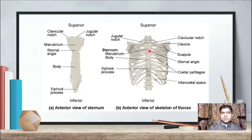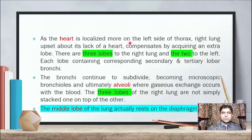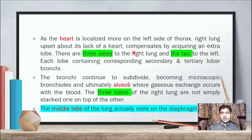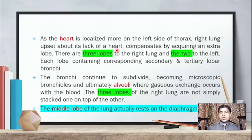The sternal angle of Lewis is clearly described here. As the heart is localized more on the left side of the thorax, the right lung, lacking a heart neighbor, has three lobes, while the left lung has two lobes. Since the heart occupies space on the left and one lobe of the left lung functions near the heart, the right lung is given an extra lobe to compensate.